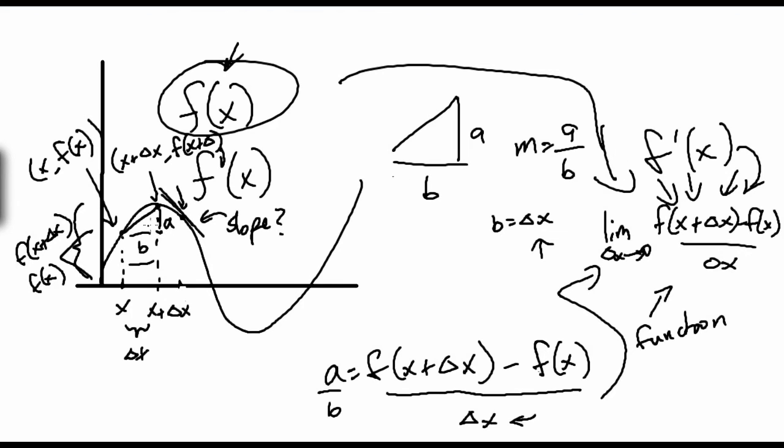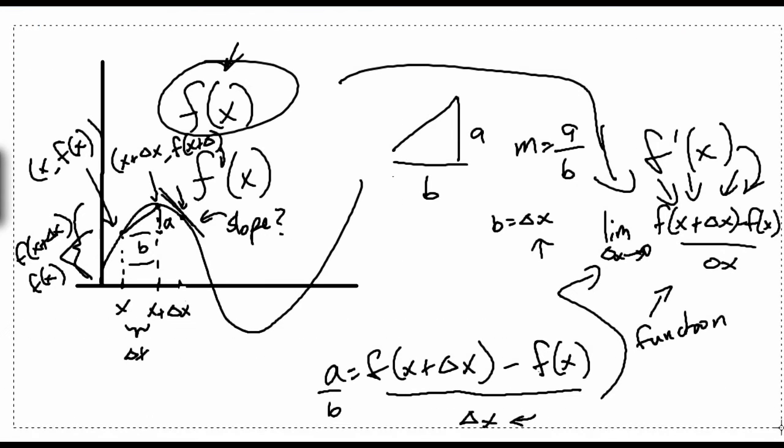Which means that if we have, if we're given an x in this function, if we're given an x, we can plug, we can also plug, we can plug that x into f prime of x and it'll spit out the slope at that point with, on f(x), on the graph of f(x). So let's calculate. Let's have an example. So I'll erase all this just to make it clear. I can see you guys might be a bit confused.